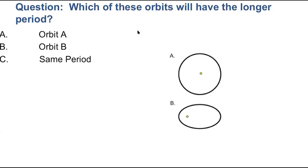Hello, Steinhauer here. Welcome back. We are continuing our discussion of Kepler's laws. To review: Kepler's first law is that planets orbit the sun in ellipses with the sun at one of the two focus points. Kepler's second law is that planets sweep out equal area in equal time. And Kepler's third law is that the orbital period squared in years is equal to the semi-major axis of that planet's orbit cubed in astronomical units.